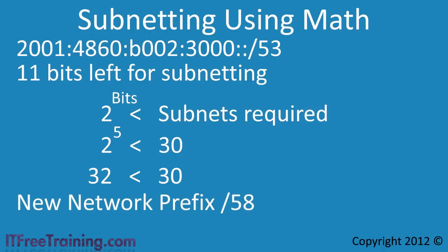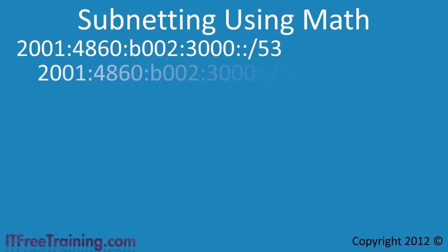The next step is to work out the subnetted address prefix for the new subnets. The first one is simple, it will be the address that we were given with a different network prefix of 58.